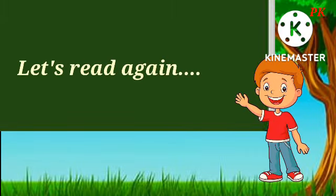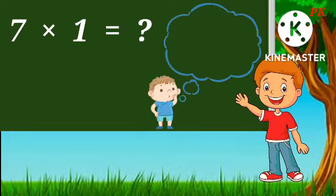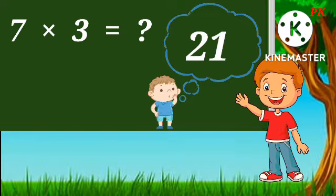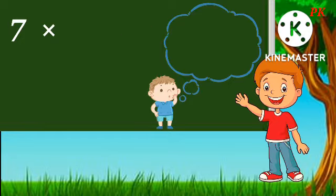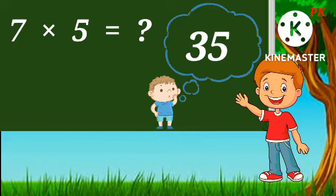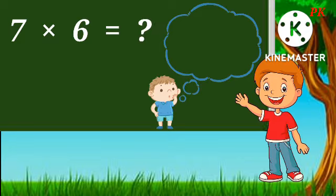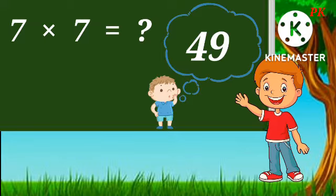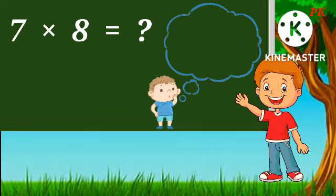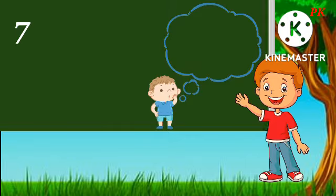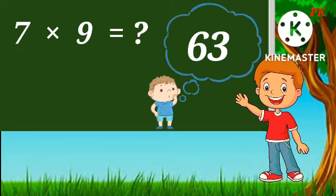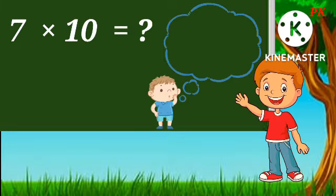Let's read again! 7 1's are 7, 7 2's are 14, 7 3's are 21, 7 4's are 28, 7 5's are 35, 7 6's are 42, 7 7's are 49, 7 8's are 56, 7 9's are 63, 7 10's are 70.